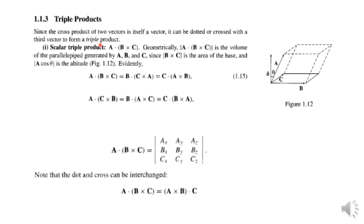Now, the triple product. We have the scalar triple product. Since B × C is itself a vector, we can take the dot product of that vector with A. So A·(B × C) — the result is a scalar. That is why it is called the scalar triple product.